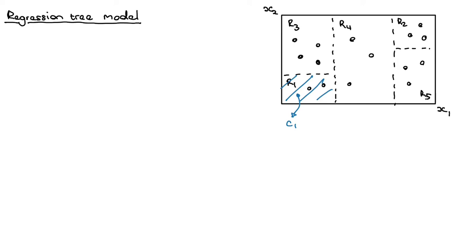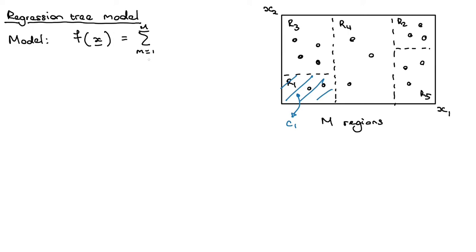For some new input x, we want to write the output of this model in mathematical form. We use f to represent our model. In general, let's say we have m regions — the model separates the input space into m regions, where in this case m equals five. The prediction of the model is the sum over all regions from m=1 up to M, of cm times the indicator function that x is within region Rm.